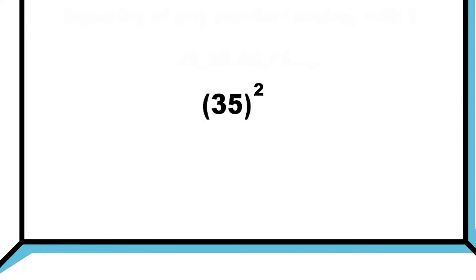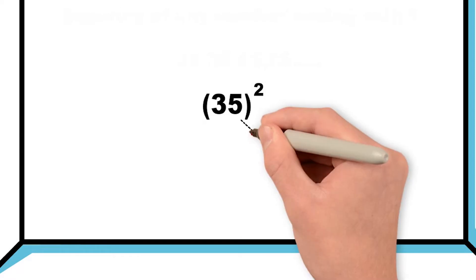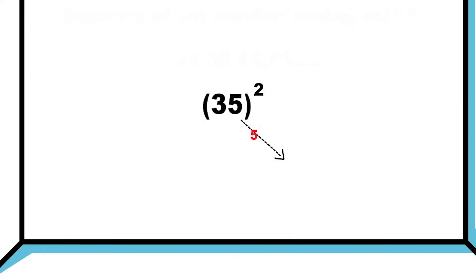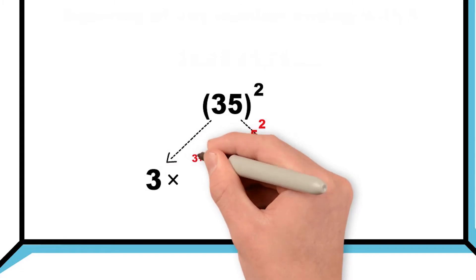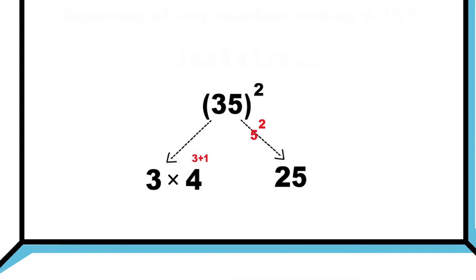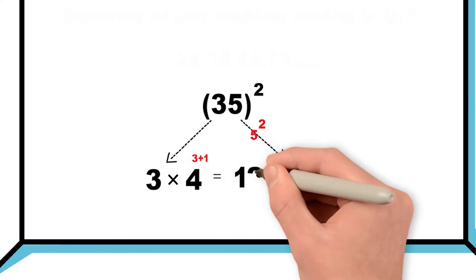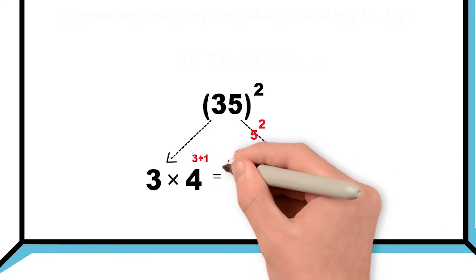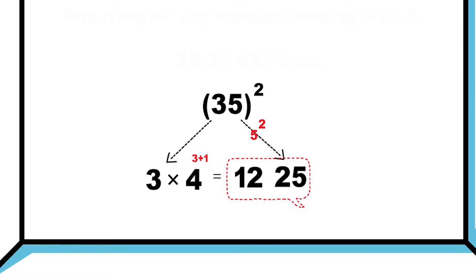First of all, we will square the unit place digit, that is 5. 5 square is 25. These are the last digits of our answer. After that, we will multiply 3 with its next number, that is 4. 3 into 4 is 12. That's it, 1225 is our final answer.